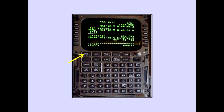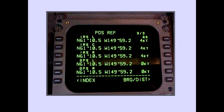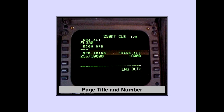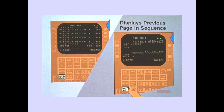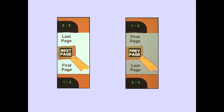Pushing a function key displays the corresponding page. The CRT displays several lines of information, and each set of information is referred to as a page. At the top of each page, the page title and page number are displayed. With multiple pages, pushing the next page key displays the next page in the sequence. On the last page, pushing the next page key displays the first page. With the first page displayed, pushing the previous page key displays the last page.